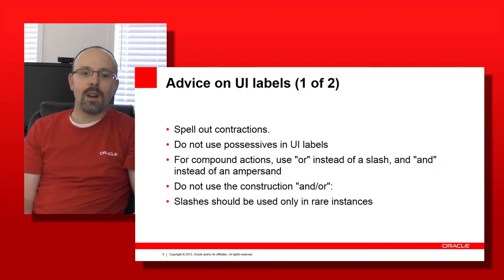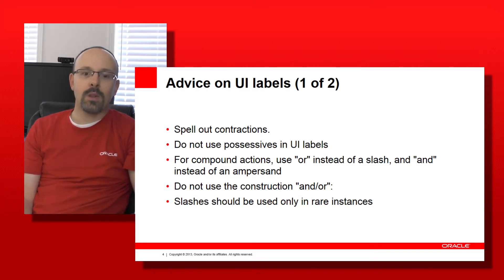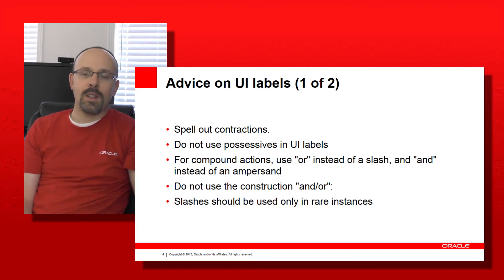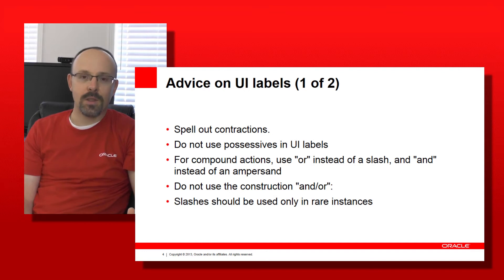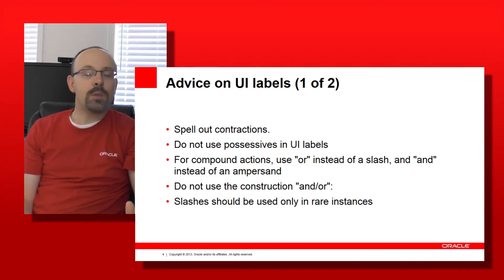Don't use symbols to convey compound relationships because those symbols may not be understood in your target cultures. Constructions like AND/OR are very ambiguous, and you shouldn't use them. If it's ambiguous in the source language, imagine what it could be when you try to translate it. Slashes shouldn't be used in UI labels because they can obscure the meaning of what you're trying to say.